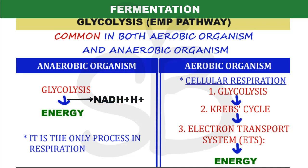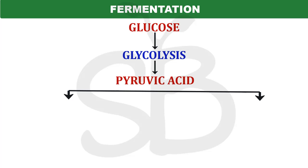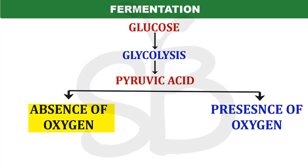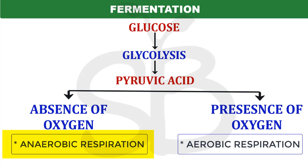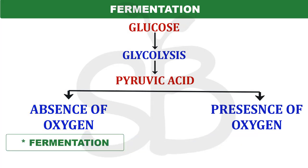This is the main part of our video. For maintaining continuity, we will start with the glycolysis end product, pyruvic acid. Depending on the availability of oxygen, pyruvic acid follows different pathways. In the absence of oxygen, this is anaerobic respiration. In the presence of oxygen, this is aerobic respiration — that is cellular respiration, involving the Krebs cycle and electron transport system. In anaerobic conditions, pyruvic acid undergoes the fermentation process.